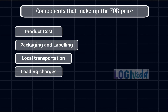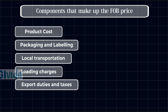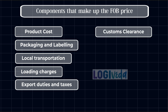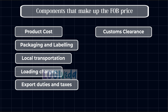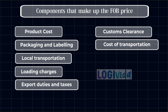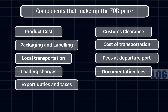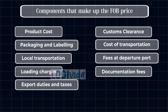Next are loading charges — fees associated with loading the goods onto a vessel. Then export duties and taxes, which the seller might have to cover if applicable. Custom clearance charges cover the cost of custom paperwork processes. We also have freight to port cost — the cost of transportation of goods to the port — and port handling charges, which are the fees at the departure port. Finally, documentation fees are included, covering documents related to the export.